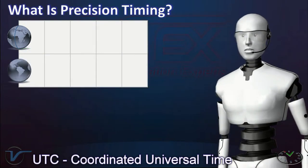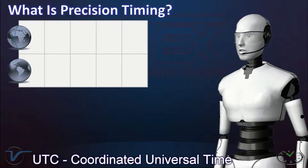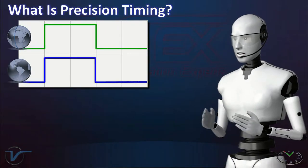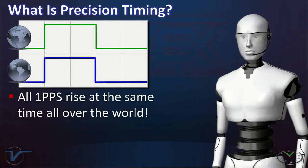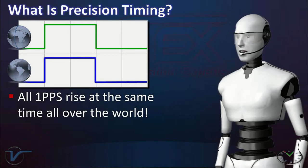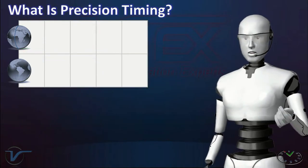Ideally, all the 1 pps pulses around the world would rise precisely at the exact same time. That is how distributed systems accurately synchronize their clocks with a high degree of precision.